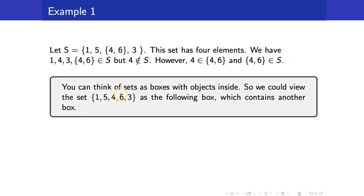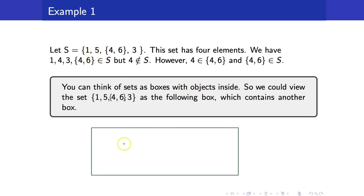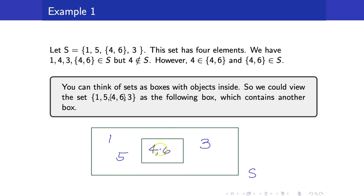You can think of sets as boxes with objects inside. So our set S is the box S, and it contains the elements 1, 5, 3, and the set {4, 6}. Since {4, 6} is also a set, we represent it by a box too — so S is a box containing a box with elements 4 and 6, along with the elements 1, 5, and 3.